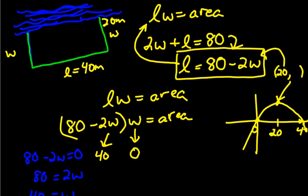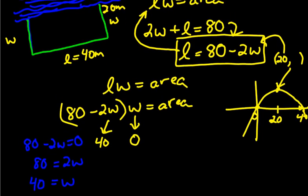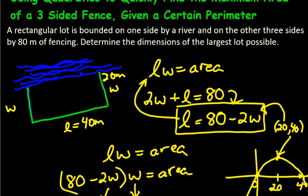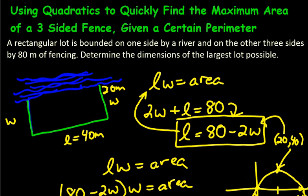And it took me a while to explain it, but really it can be done very quickly if you do it without me talking. So 20 and 40. And there is our maximum possible area given three sides. And quadratics can be used for many kinds of questions that have to do with maximums and minimums as well. And in this case we just used it for the three-sided fence situation.